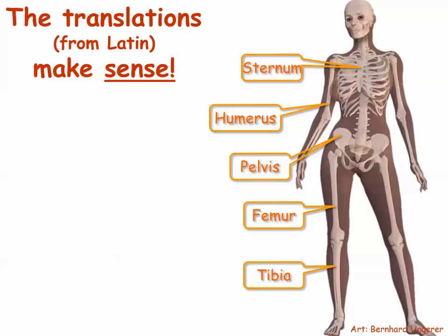Here's the trick: if you pay attention to the meaning of each term, it will make each term easy to remember. And if it's easy to remember, it won't take very long to learn even a humongous list of terms. So let's take a look at a few. If you know the term sternum means breastbone, then it will make sense to you and it will be easier to remember. The same is true for the humerus, which means arm. The pelvis, which resembles a shallow bowl with a large drain at the bottom, has a name that means basin. Femur is the Latin word for thigh, and tibia is the Latin word for shin bone.